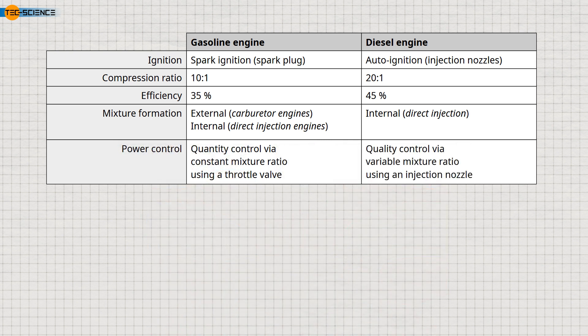The reason why diesel engines must always draw in the same amount of air is due to the principle of compression ignition. To reach the required auto-ignition temperature, a constant air mass must be present. If the air mass in the cylinder is too small, the initial pressure before compression would be insufficient, resulting in insufficient final pressure and temperature after compression.